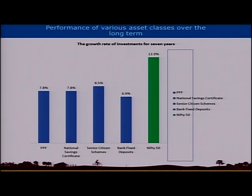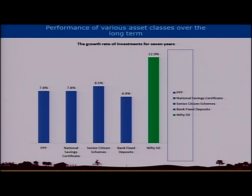Here is a performance comparison of various popular asset classes over the last seven years. Sovereign-guaranteed instruments include PPF at 7.8% — a good instrument as maturity is totally tax-free — National Savings Certificate at 7.8%, Senior Citizen Savings Scheme at 8.5% (senior citizens receive higher rates from both banks and the government), and Bank Fixed Deposits at 6.9%. NIFTY has given about 12.9% return over the last seven years.